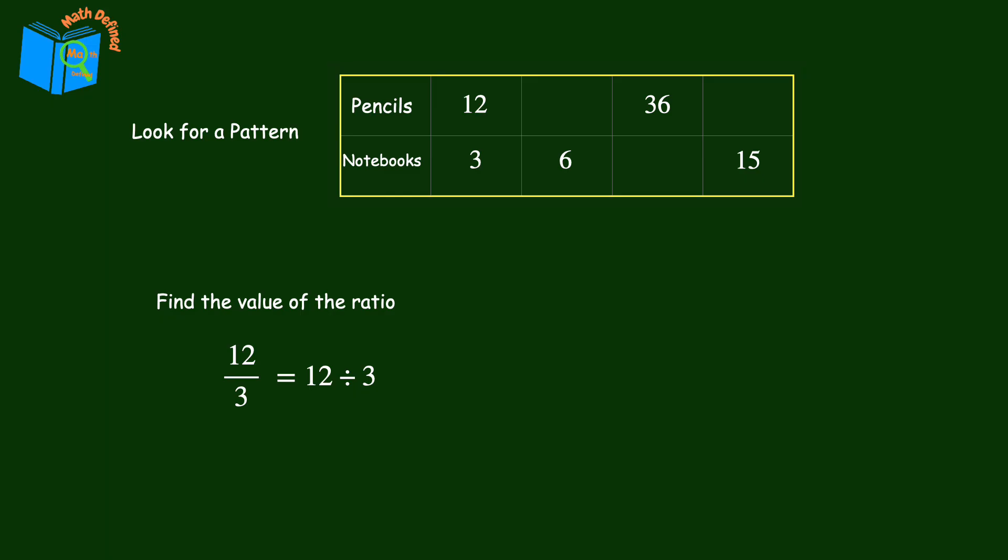12 divided by 3 is 4, so the value of the ratio is 4. This means that the amount of pencils is 4 times the amount of notebooks. But how is this going to help us find missing values in the table?